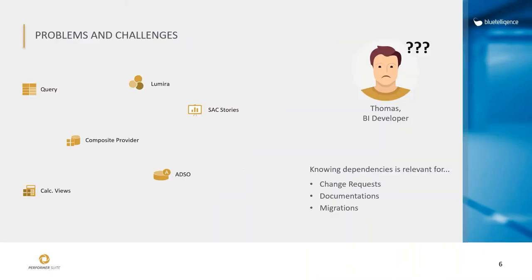This is Thomas. Thomas is a BI developer who is working in an environment of different SAP solutions. You can see different objects from different SAP systems: Lumira reports, SAC stories, composite providers and ADSOs from a BW system, or a calculation view from HANA. To work in this environment, Thomas uses a handful of applications like SAP GUI, Eclipse, Lumira, SAC, or HANA Studio to analyze these objects. If Thomas needs detailed information about each object, he usually needs to sign in to each application individually.